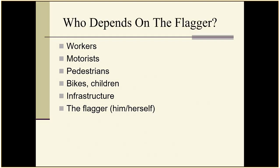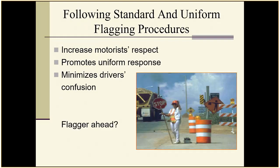Many people depend on the flagger: workers, motorists, pedestrians, people on bicycles, children, and infrastructure — as well as the flagger themselves. Following standard and uniform flagging procedures increases motorist respect, promotes a uniform response from motorists, and minimizes driver confusion. In one example picture, a flagger's symbol sign is behind her — that's not correct. We want that sign well in advance of the flagger so the motorist is looking for them.